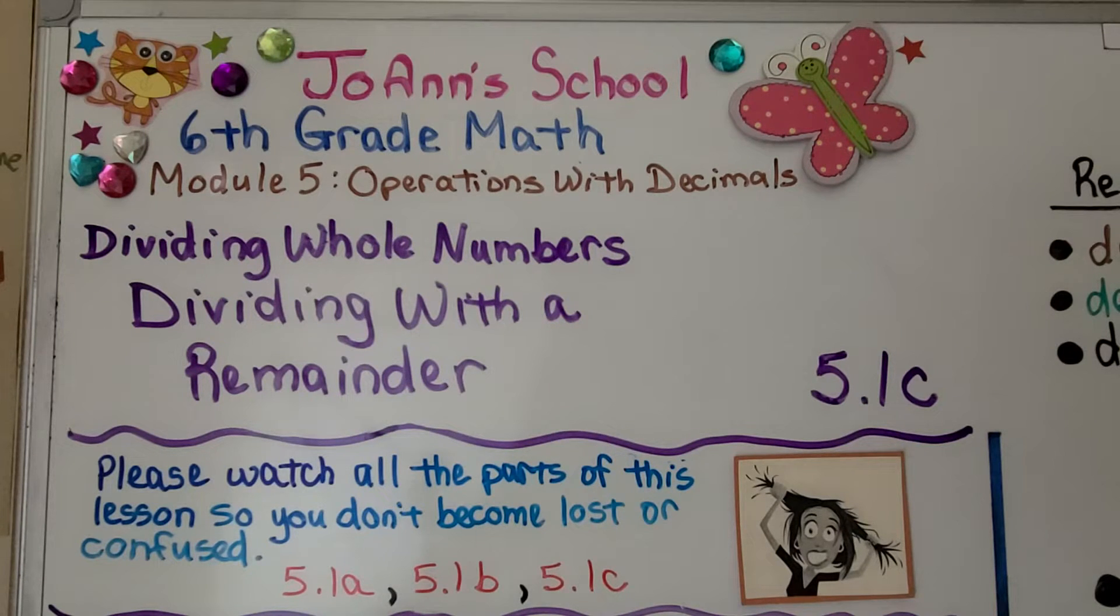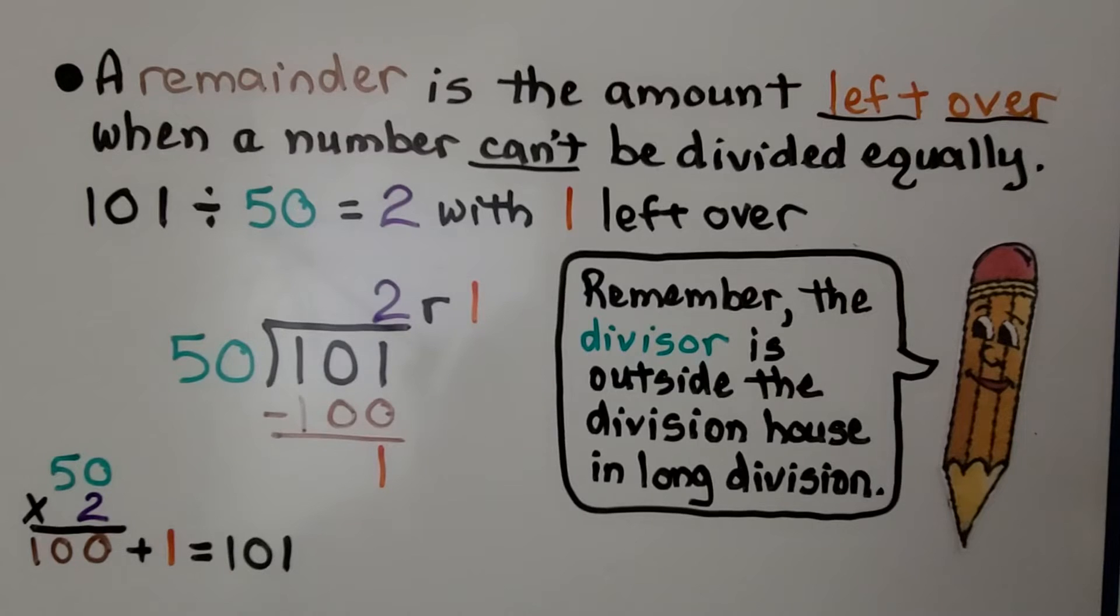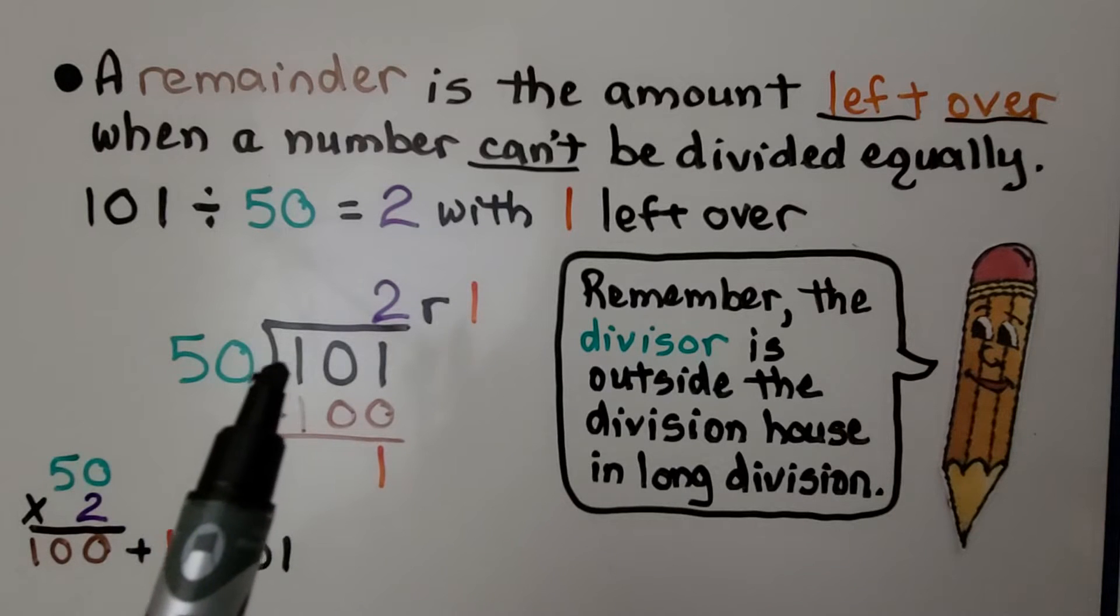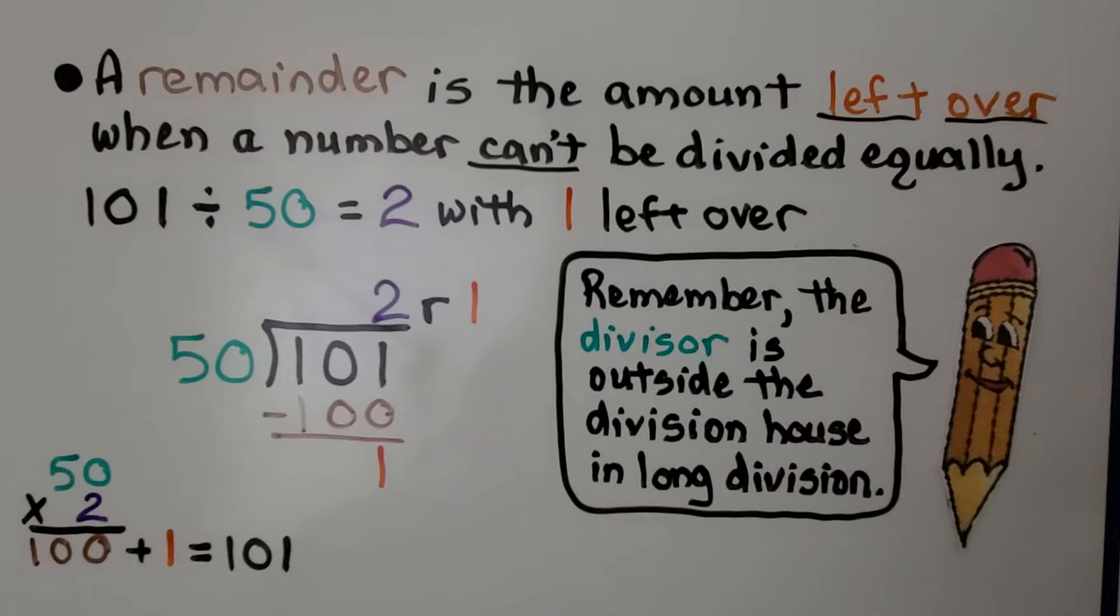Lesson 5.1c, Dividing with a Remainder. A remainder is the amount left over when a number can't be divided equally. 101 divided by 50 is equal to 2 with 1 left over. There's two 50s in 101 with 1 left over.